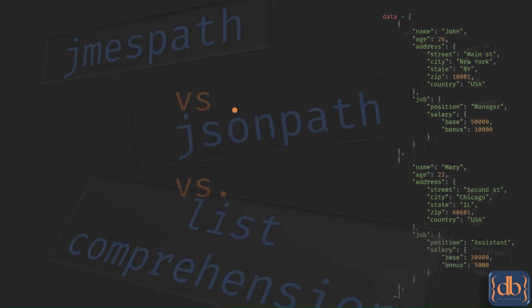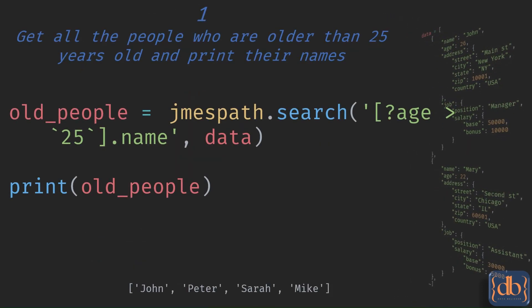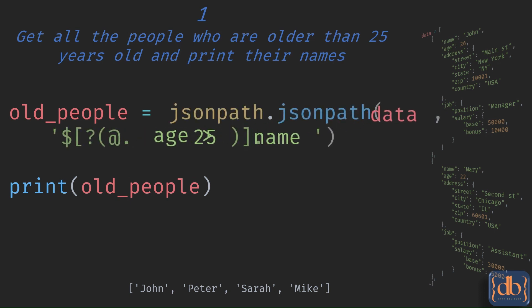Welcome to today's episode. In this video, we'll be exploring three different approaches for retrieving data from a JSON document. These approaches include using jmespath, jsonpath, and list comprehension.